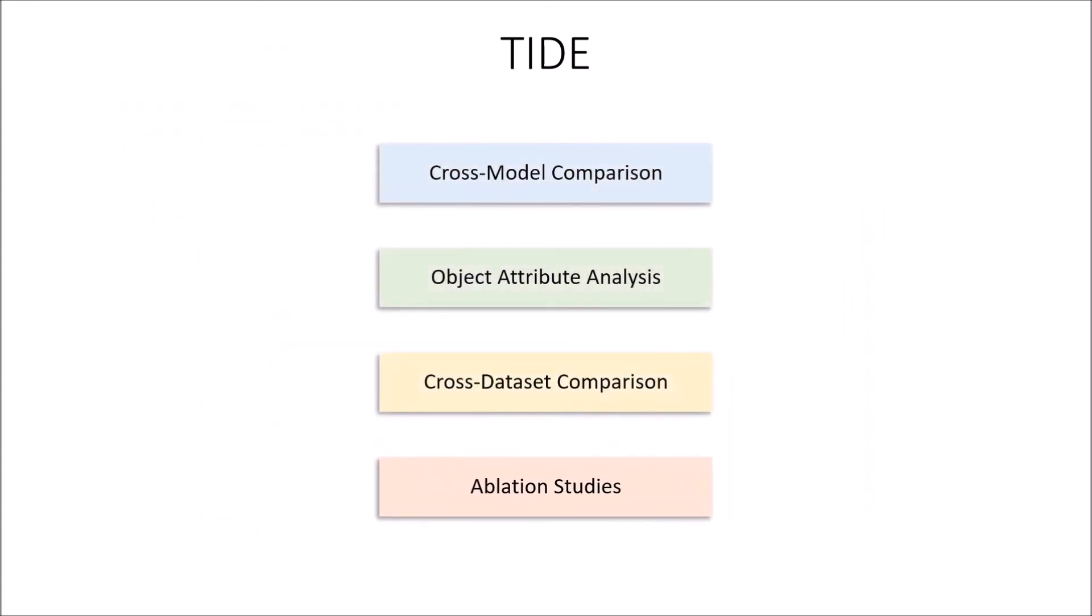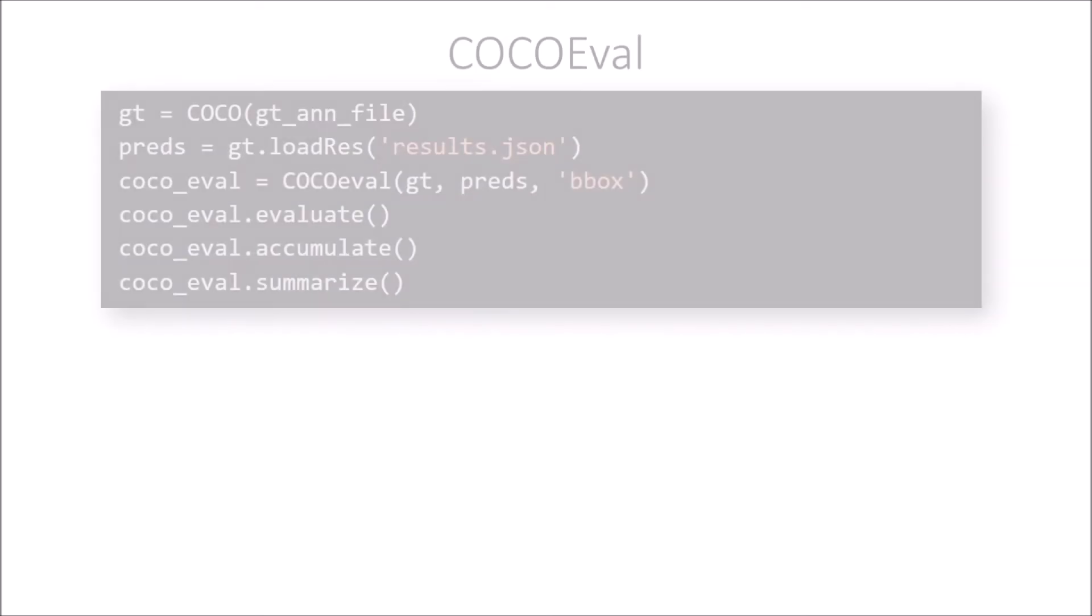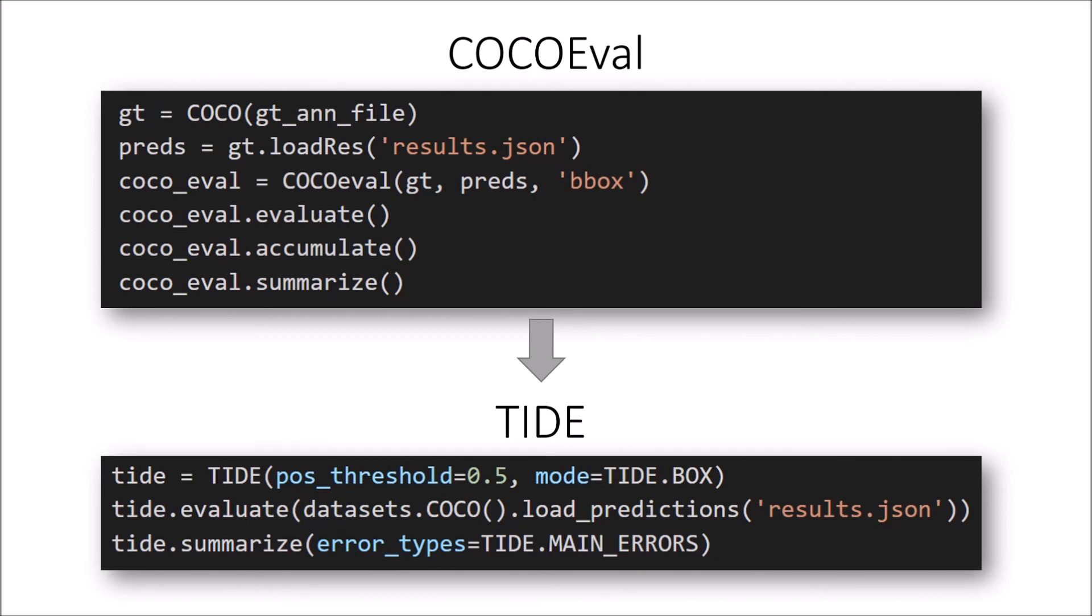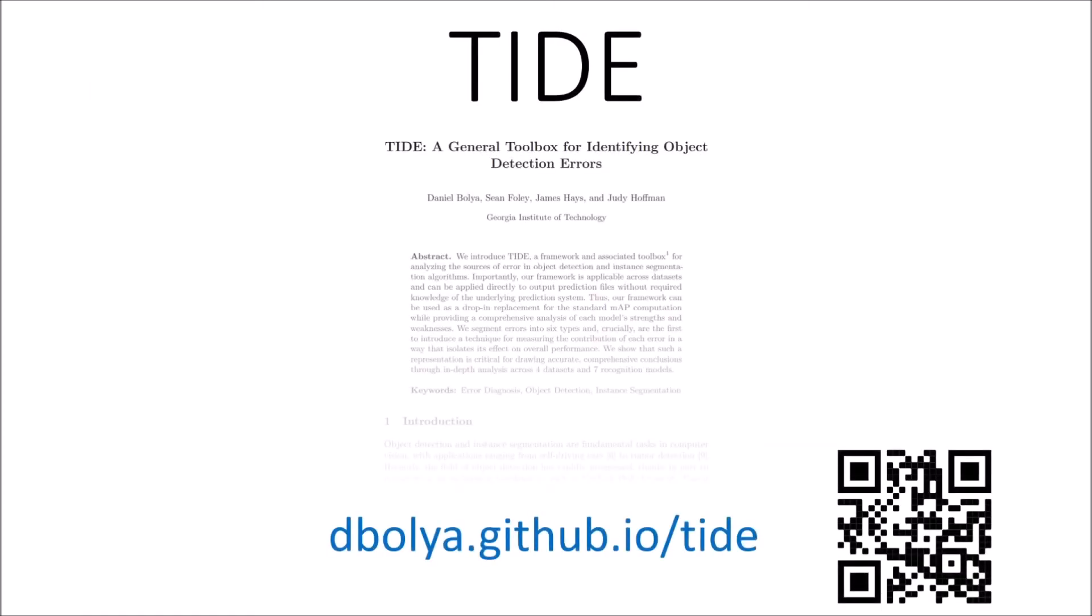We hope to see TIDE being used for all of these modes of analysis and more. To that effect, we've tried making TIDE as simple to use as possible. In fact, TIDE is a drop-in replacement for standard MAP calculations. All you need to do, if you've been using COCOEval for example, is swap your COCOEval code for these few lines of TIDE code, and you get all this extra information about your model. And since it's been a problem for previous toolkits, we've also tried to make the code as clear as possible. Moreover, our toolbox is extensible. You can find your own errors, your own datasets, and your own custom modes of analysis. TIDE is available here, and we've opened up to the community for future development. We hope TIDE can become the basis for future analysis in object detection and instance segmentation. Thank you for listening to my talk.